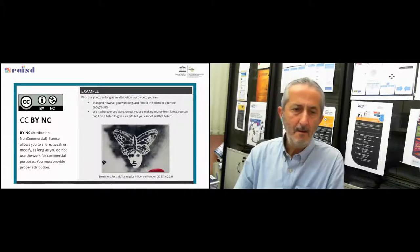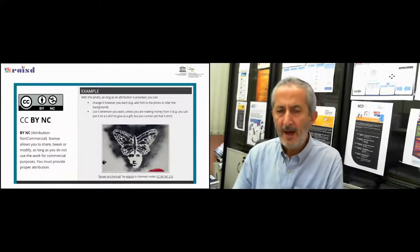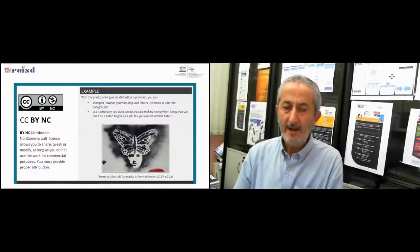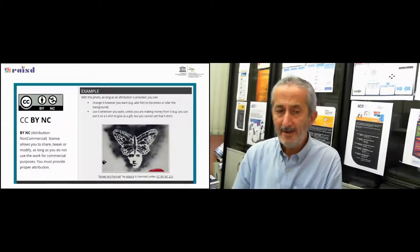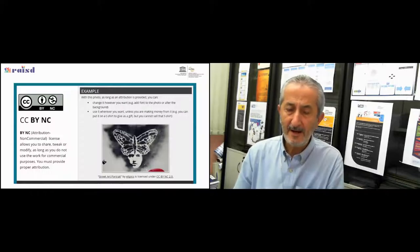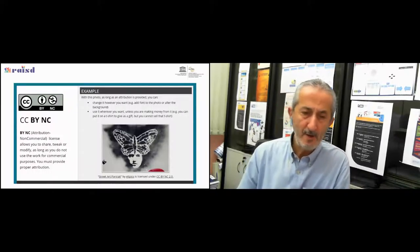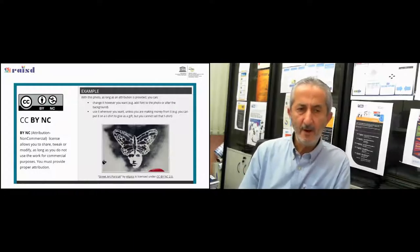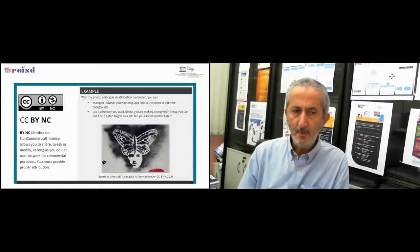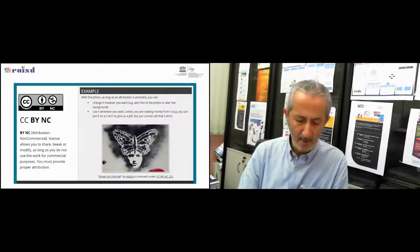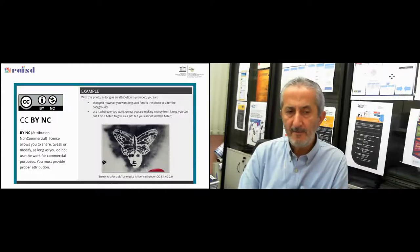CC BY NC: take it, change it, print it on a t-shirt or hat — whatever you like. But don't make money from it. Don't take this portrait, print it on a t-shirt, and sell it for five dollars. That would violate the license, and the copyright owner can take you to court if you don't use the license appropriately.